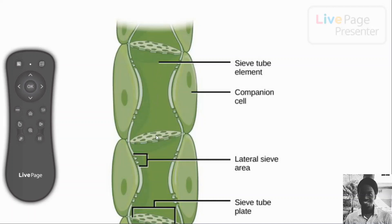Materials are conducted from sites of production, called sources, to sites of need or delivery, called sinks. Phloem sieve tubes carry materials from sources to sinks through sieve tube elements, assisted by companion cells.